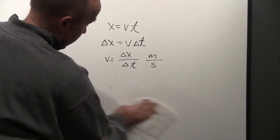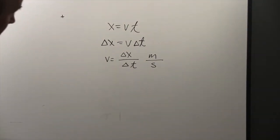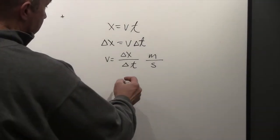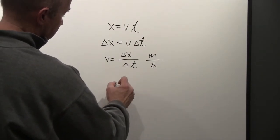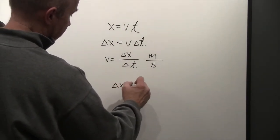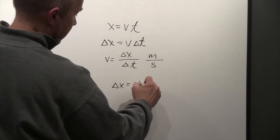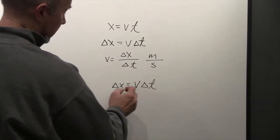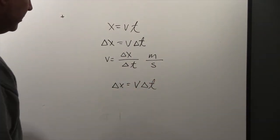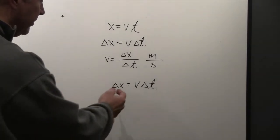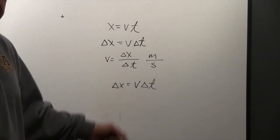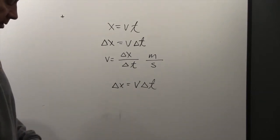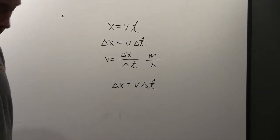You can also work this the other way: if you want to know your change in x, and you know what your velocity is and your change in time, you can figure out how far you've gone. So if you know a starting point — say x was 2 — and you find delta x, you just add that to it and find your new x location.